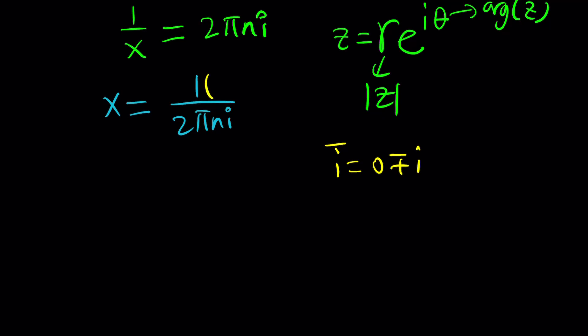So, i times negative i is negative i^2, which is 1. This is 1, so I can totally get rid of it.